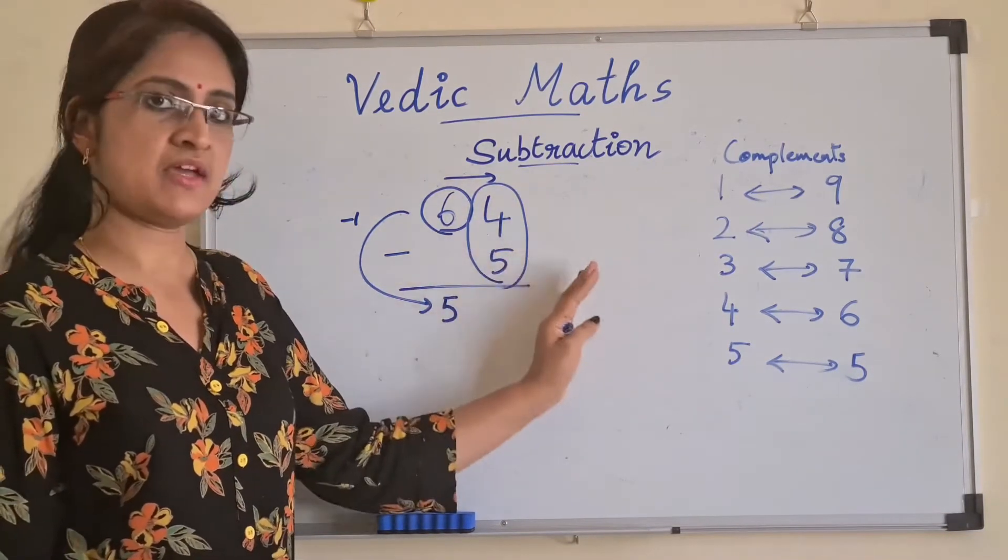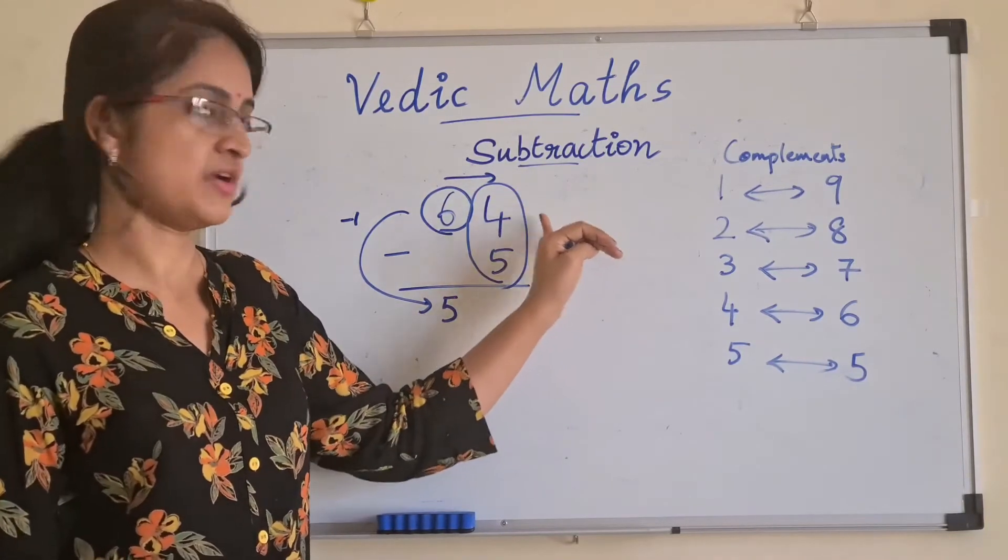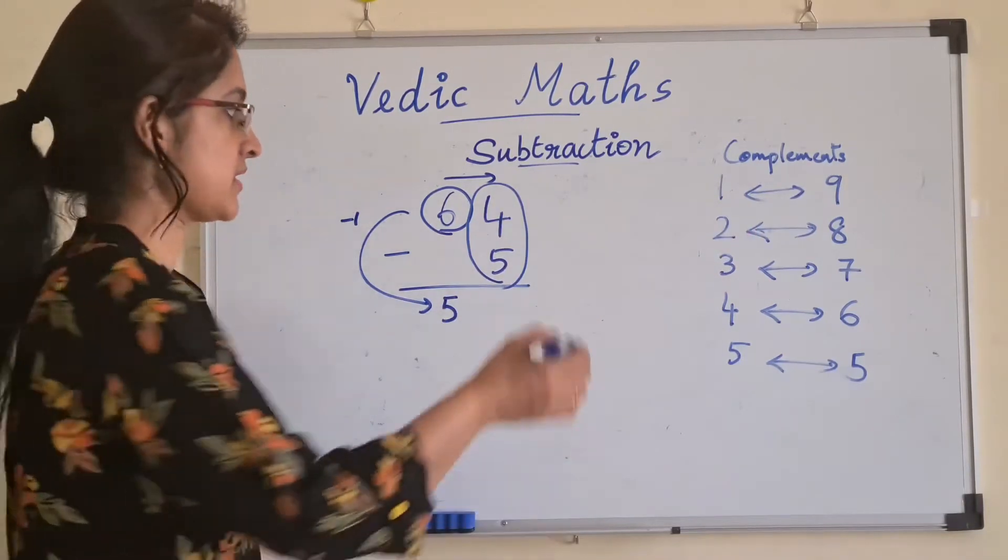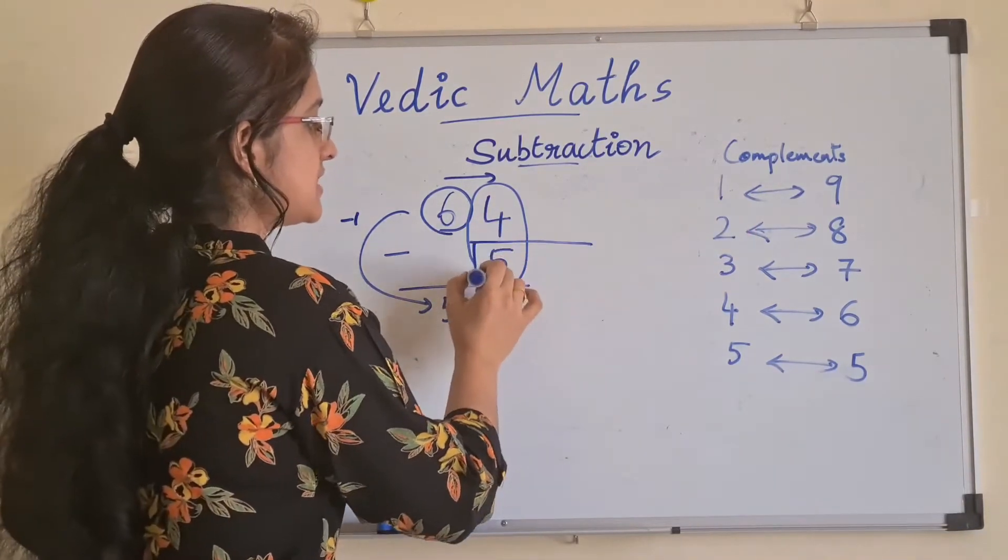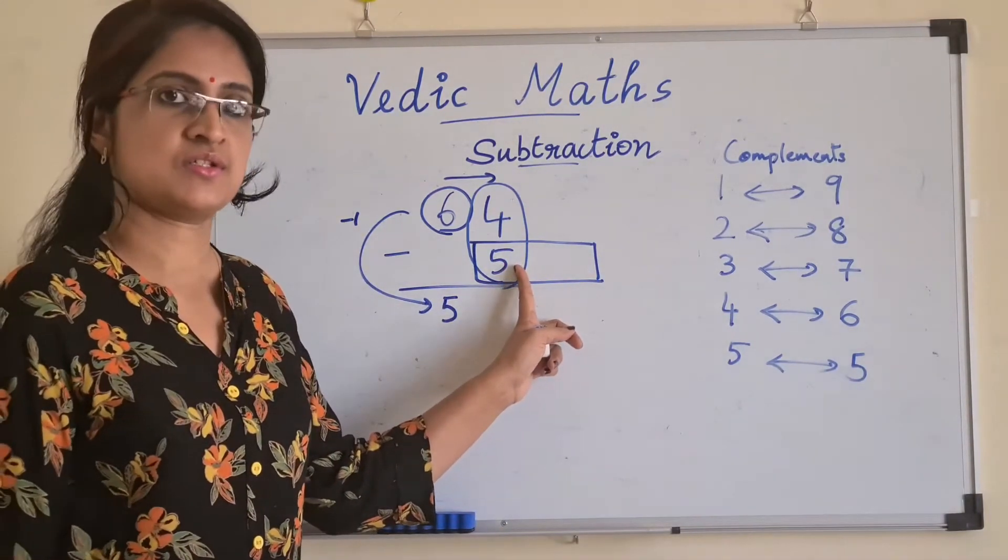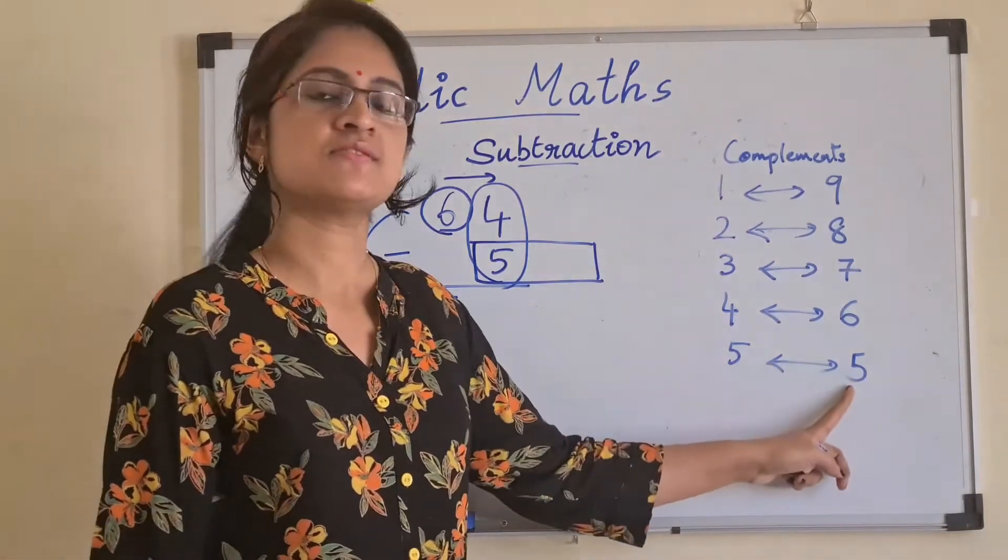We move to the next step, 4 minus 5. Since we cannot subtract 5 from 4, because 5 is greater than 4, we will move for the complements. We need to find the complement of 5 first. What is the complement of 5? The complement of 5 is 5 itself.